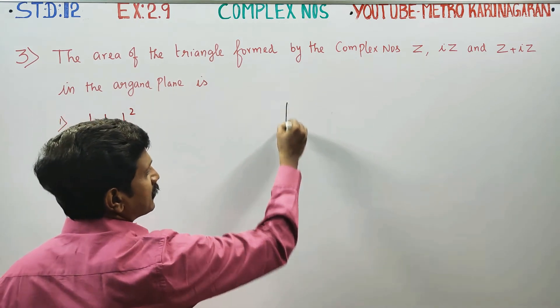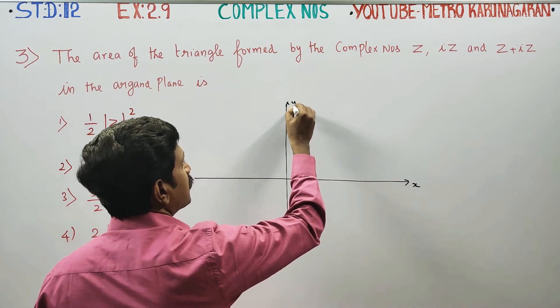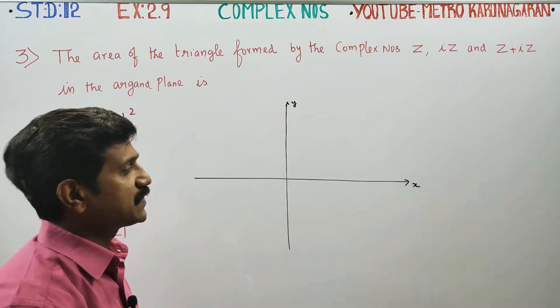area of the triangle. For example, the X axis, Y axis. The real axis, imaginary axis. This is my real axis and this is my imaginary axis.